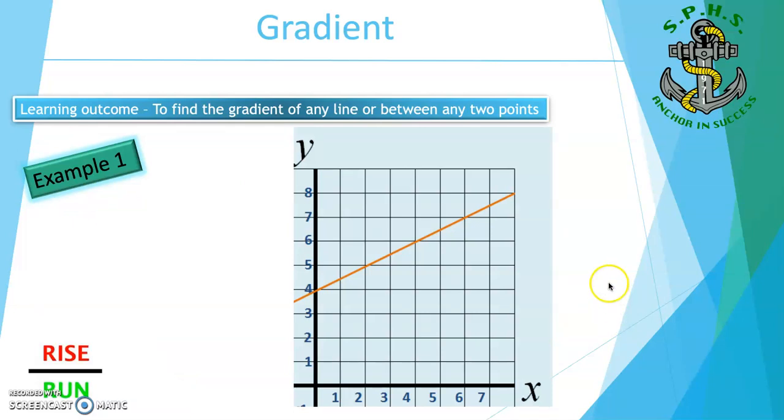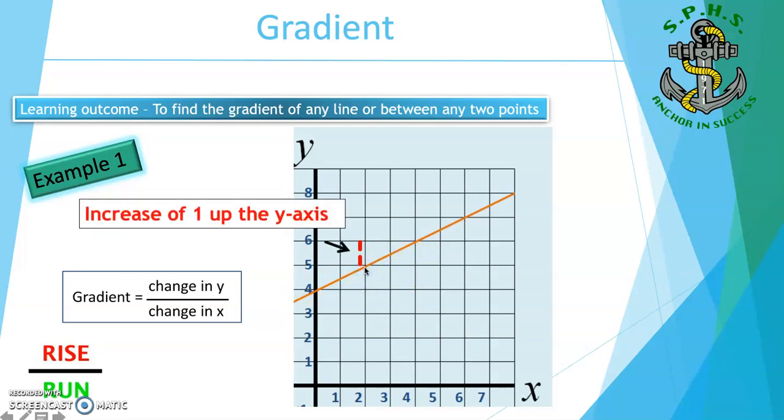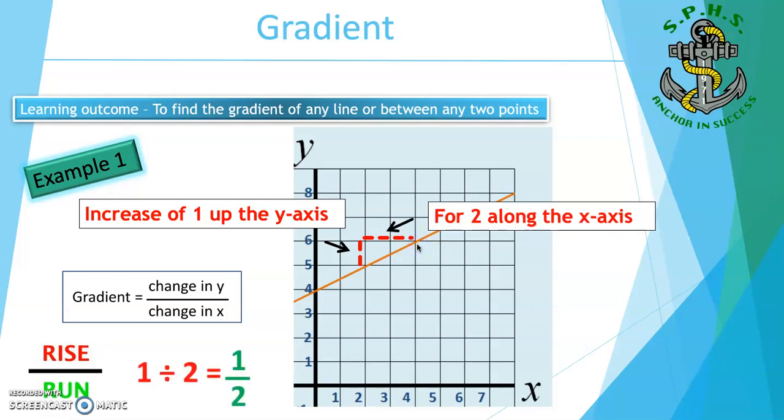Example 1. You can find the gradient by the graph. We use the rise over run method. It calculates the change in the y coordinates over the change in the x coordinates. You can choose any two points on the line. For this example, we will choose this point to the next point over here. To get from this point to the next point, I have to go up 1. This is the rise. Then I have to go over 2 units. This is the run. So the gradient of this line is 1 over 2.